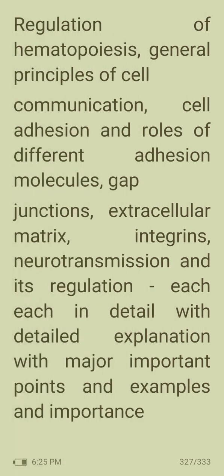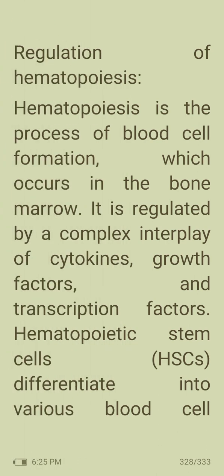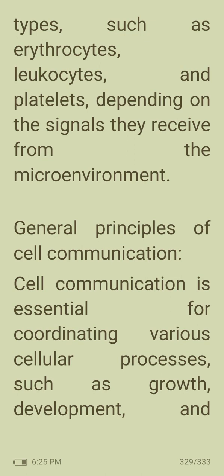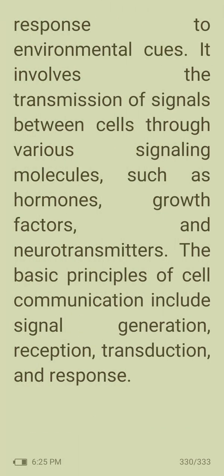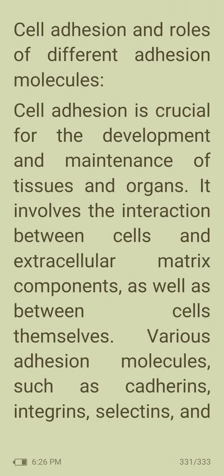Hematopoiesis is the process of blood cell formation occurring in the bone marrow. It is regulated by a complex interplay of cytokines, growth factors, and transcription factors. Hematopoietic stem cells differentiate into various blood cell types such as erythrocytes, leukocytes, and platelets depending on signals from the microenvironment. The general principles of cell communication include signal generation, reception, transduction, and response.